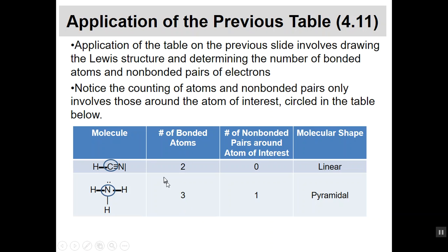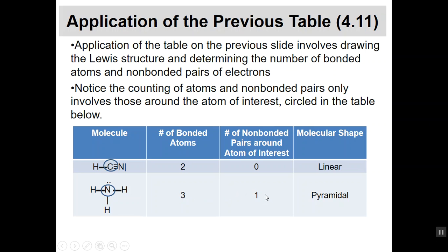Let's look at some examples. One molecule has two attachments — hydrogen and nitrogen on the central atom, no non-bonded electrons — so it's going to be linear, falling right into the table. Another has nitrogen in the center with three hydrogens bonded to it and one non-bonded pair of electrons around it — it's going to be pyramidal.